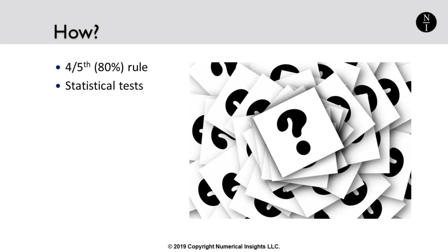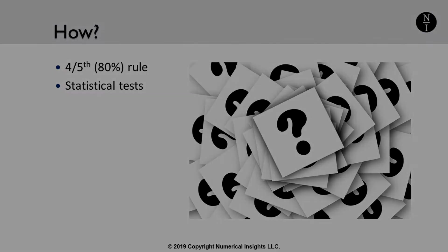How exactly do we conduct a test to see if our HR processes are impacting one protected group more than another? There are two generally accepted ways. The first is known as the 4/5ths rule, or 80% rule, and the second is a statistical test. Each method has its benefits and its flaws, which will be discussed later. For now, let's learn how to conduct an adverse impact analysis using the 4/5ths rule.